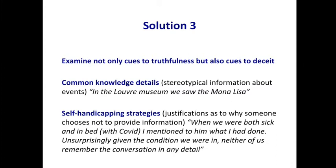Here is an example probably more relevant for a UK audience: Dominic Cummings, advisor of Boris Johnson, the prime minister. They both had COVID, and during that time Cummings drove with his wife and child from London during lockdown to the north of England — completely illegal. He was supported by Johnson for doing that and was interviewed about why. When asked whether he discussed this with Johnson, he said yes. When asked what they discussed, he said: 'When we were both sick and in bed with COVID, I mentioned to him what I had done. Unsurprisingly, given the condition we were in, neither of us remembered the conversation in any detail.' That's a self-handicapping strategy — not only for himself but now also for Johnson. I'm absolutely convinced Cummings knows what he discussed but doesn't want to tell us.